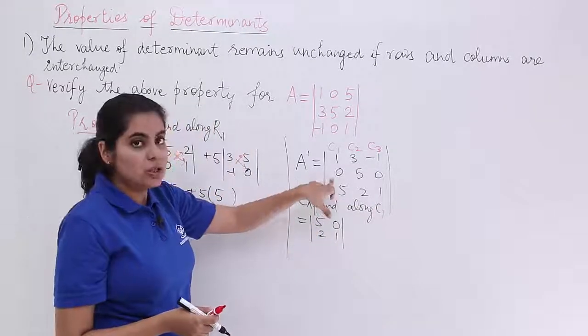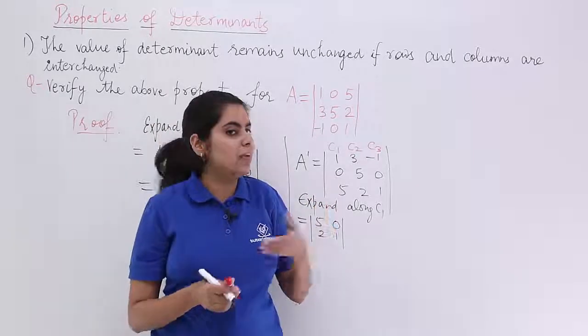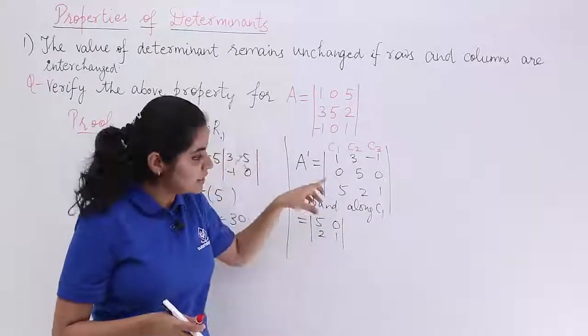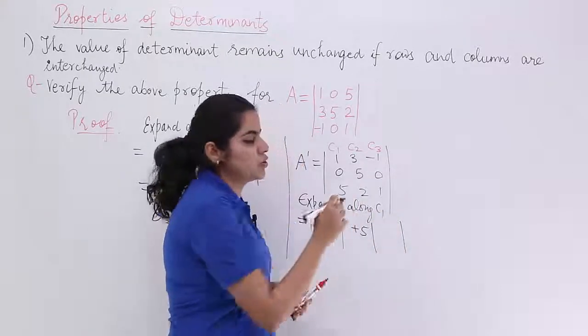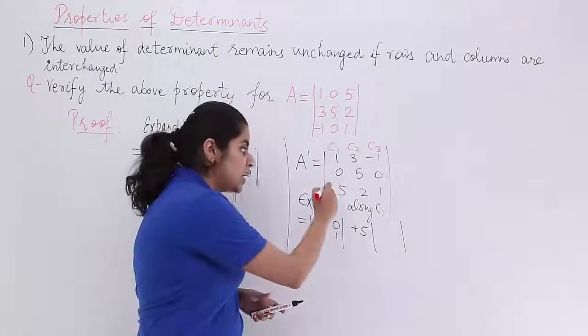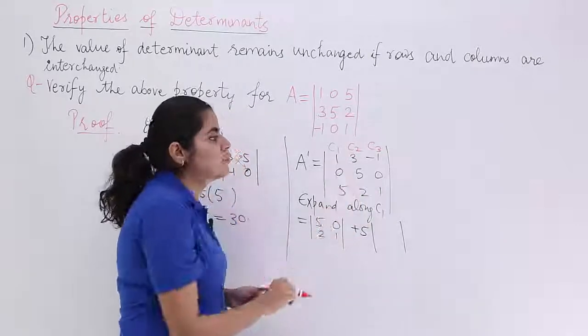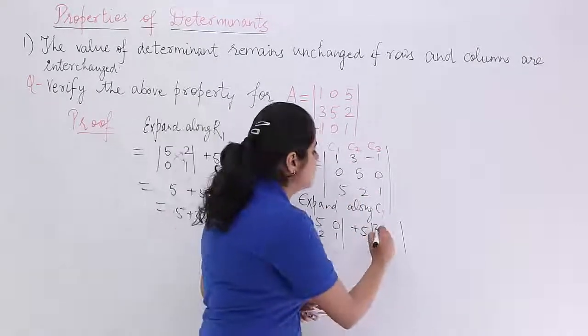Then you have 0 into something. What is 0 into something? It is always 0. Leave it. Next is 5. So you write plus 5 into a sub-determinant. Ignore this third row, ignore the first column. You have 3, minus 1, 5, 0.